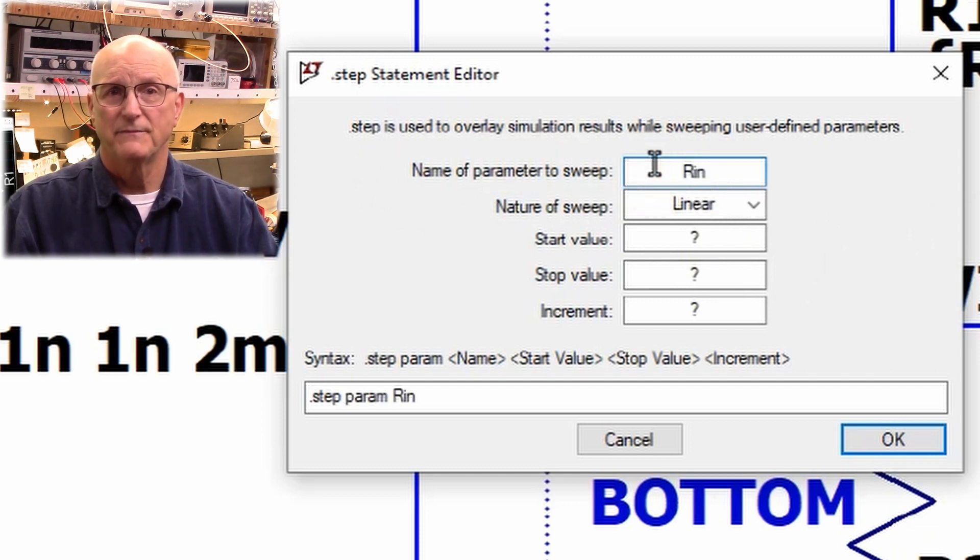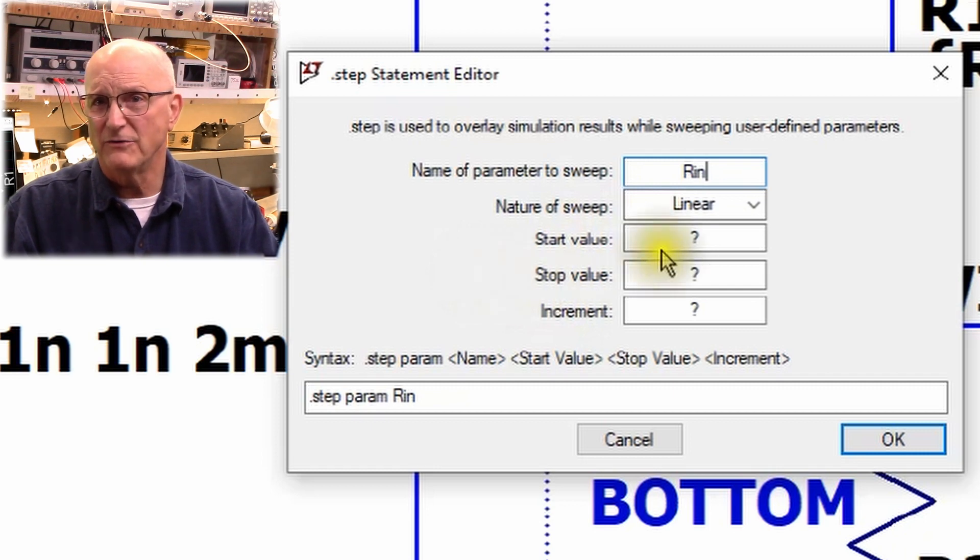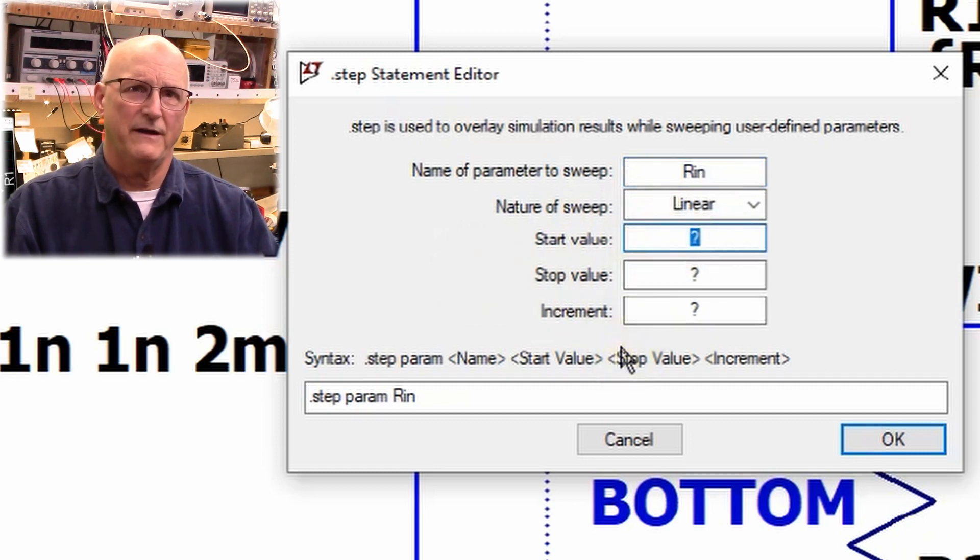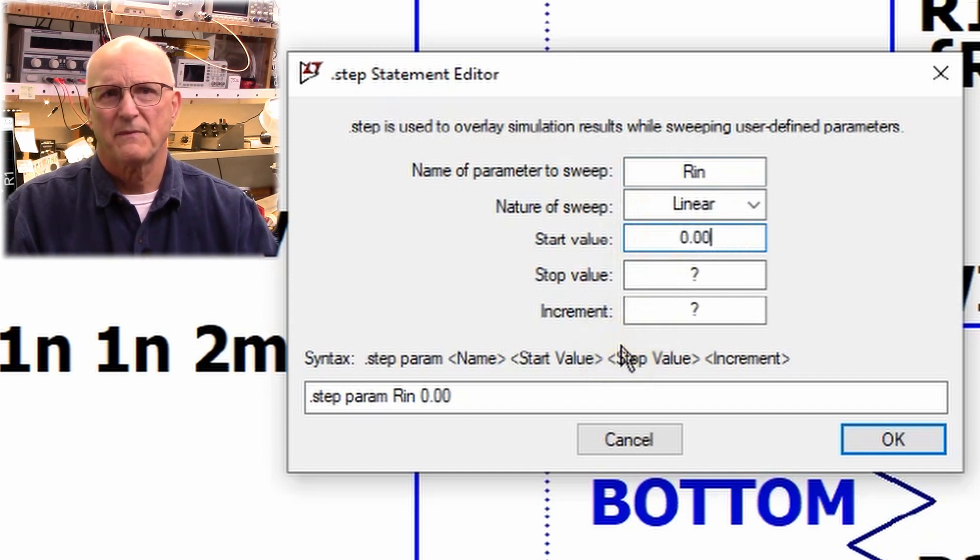In the Name of Parameter to Sweep field, I'm going to enter the parameter name for R1, which is Rn. Next, I'm going to leave the nature of sweep as linear. With this I define the start and end values and an increment value for the resistor. They don't like the resistor values to be 0, so my start value is going to be a very small value, say 1 milliohm. I am using a 10k ohm potentiometer, so my stop value is going to be 10k. For the increment, I will choose an increment of 1k. This means that R1 will have the values of 1 milliohm, 1k, 2k, 3k, and so on, up to 10k. We are all done, click on the OK button.